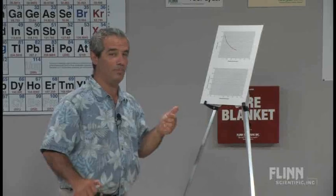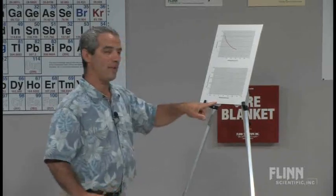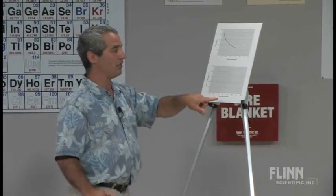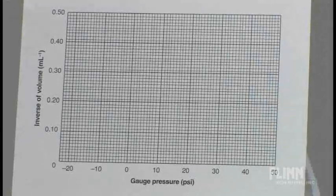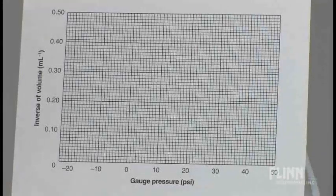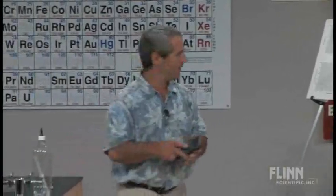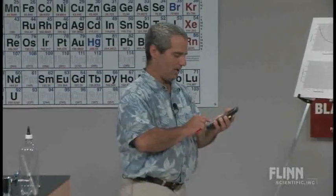Think about it: pressure and volume are inversely related, but that means that pressure and the inverse of volume would be directly related. So down here I'm going to do a graph of pressure - the same pressures - but the inverse of the volumes. Would you mind just writing these down so I can do them on the calculator?